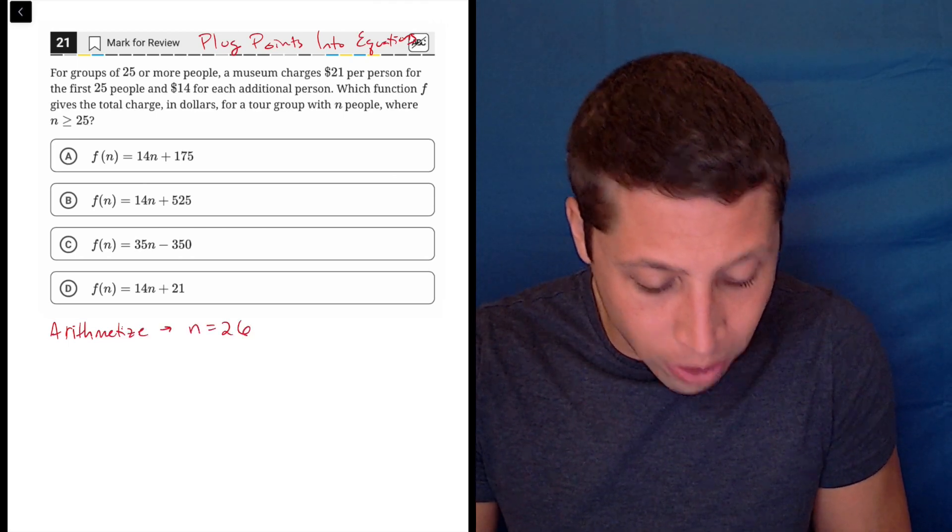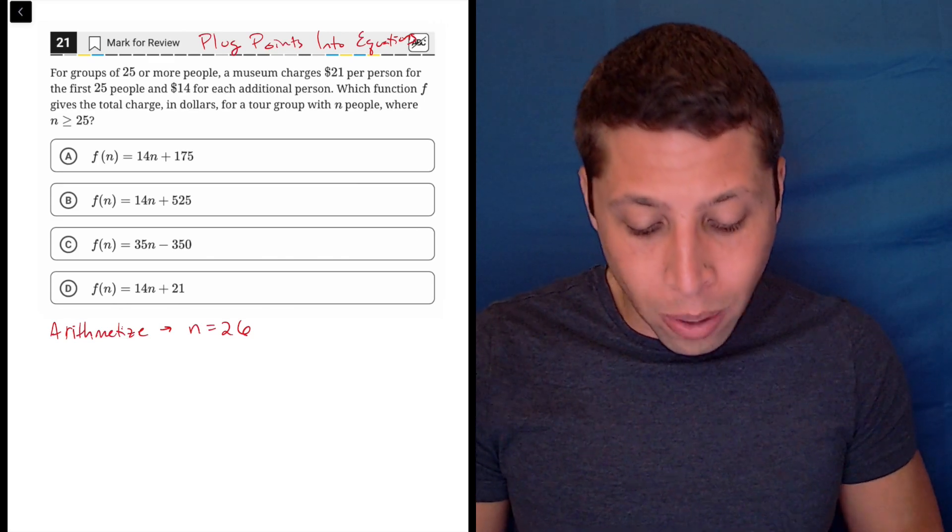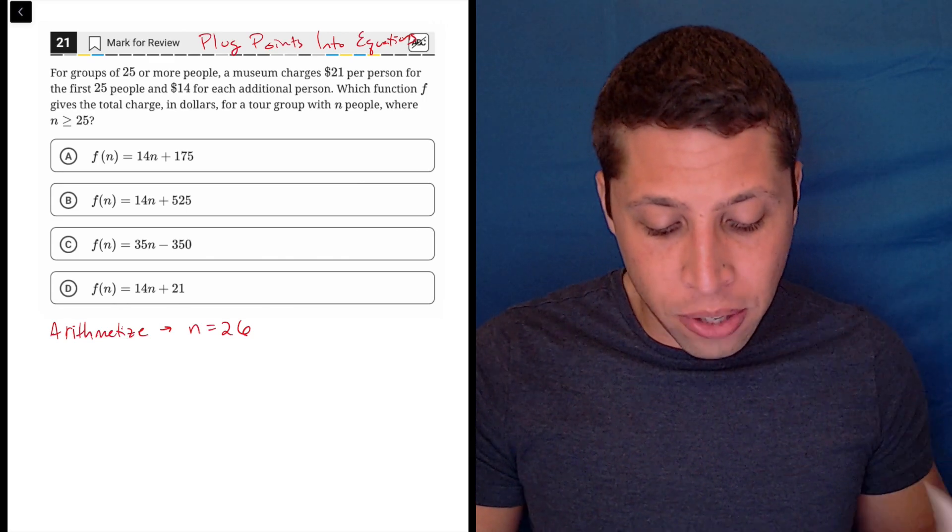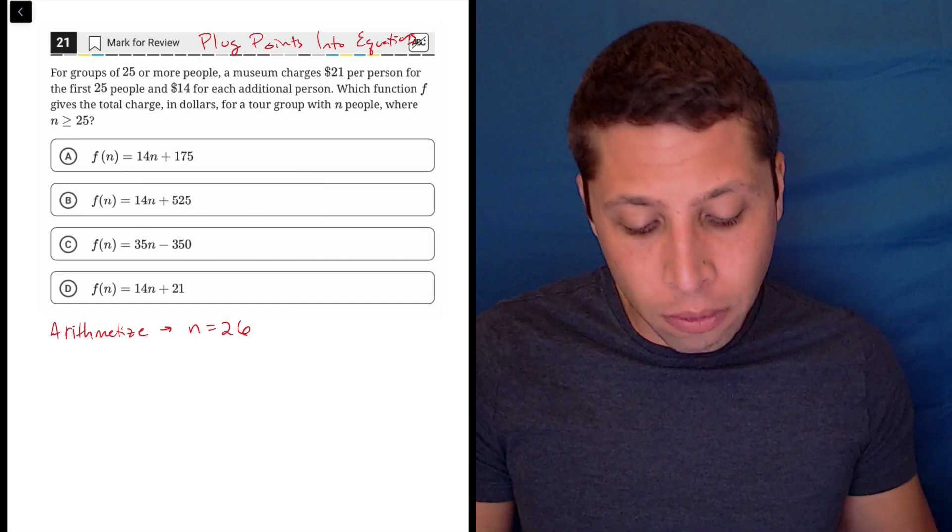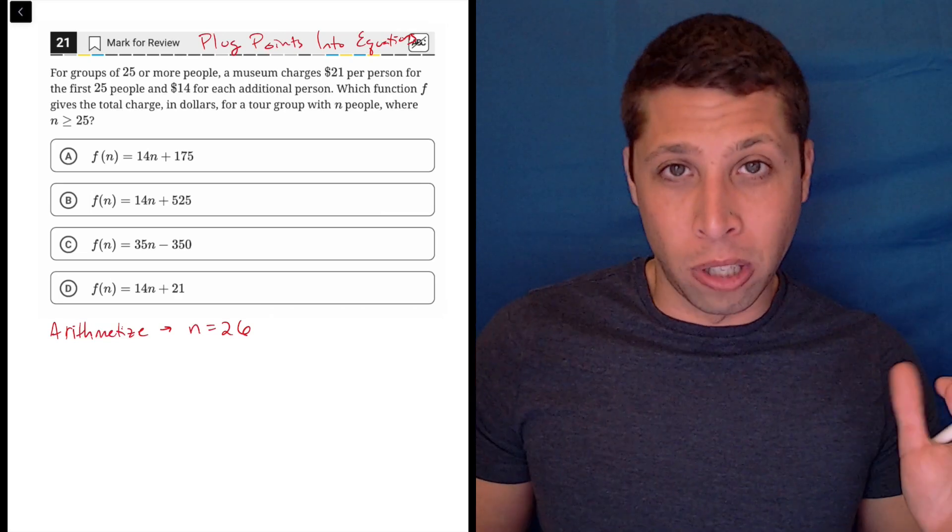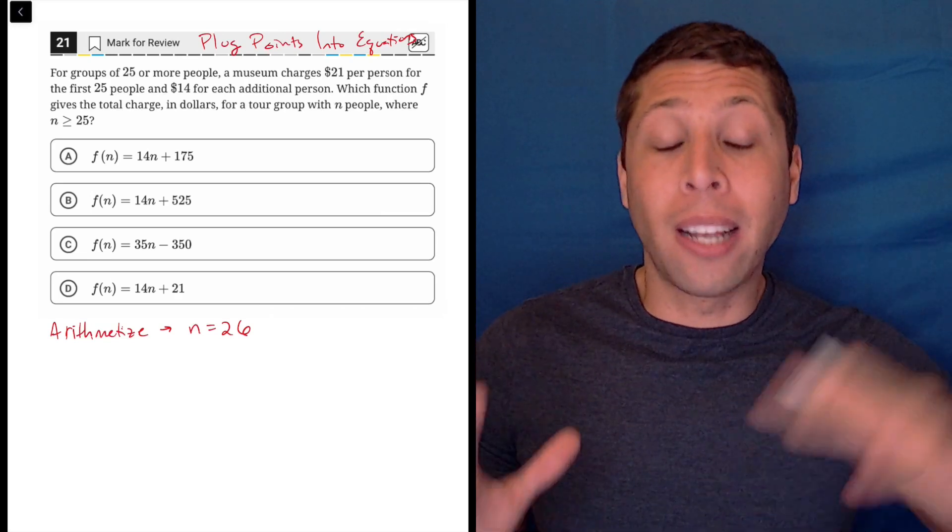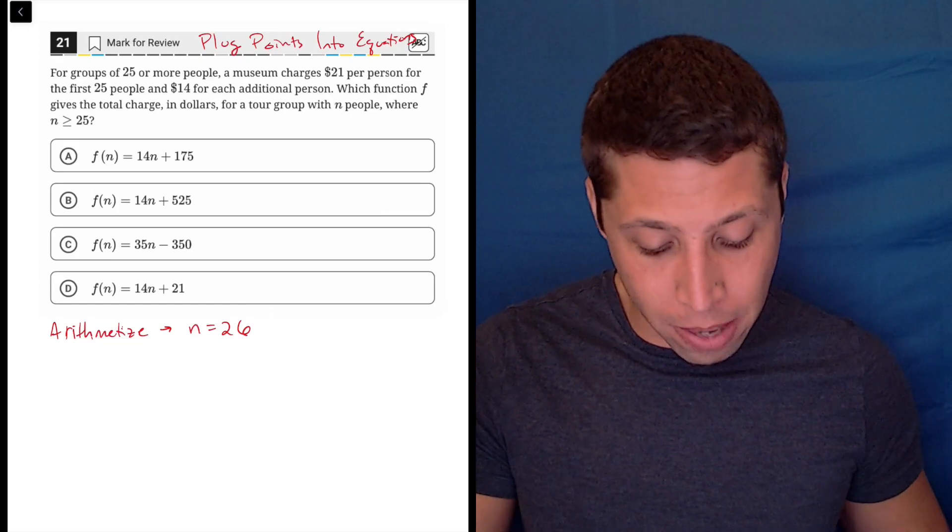We're going to just say that n is 26. Why 26? Look at the story. For groups of 25 or more people, a museum charges $21 per person for the first 25 people and $14 for each additional person. So the weird thing is the 14. So let's at least incorporate that a little bit. Let's get the 25 people and then add in one extra and just see what that would be.